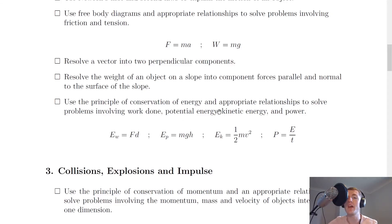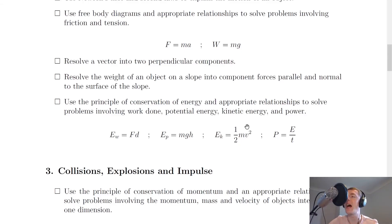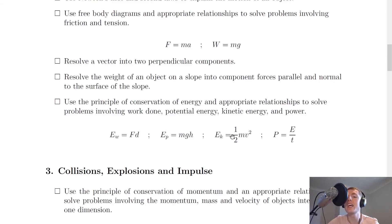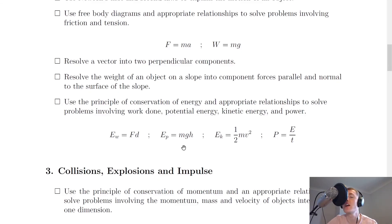Lastly in section two, you need to use the principle of conservation of energy and appropriate relationships to solve problems involving work done, potential energy, kinetic energy and power — specifically gravitational potential energy. The principle states that energy cannot be created or destroyed but can be changed from one form to another. The equations are: Ew equals Fd for work done; Ep equals mgH for gravitational potential energy; Ek equals a half mv squared for kinetic energy; and P equals E over t for power. Conservation of energy questions often involve equating two energy expressions to find an unknown variable.